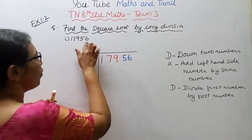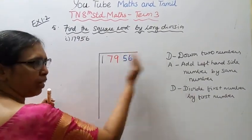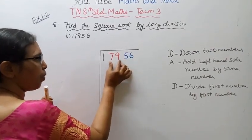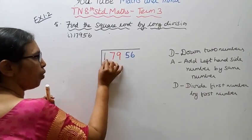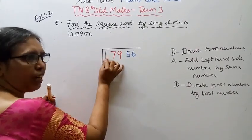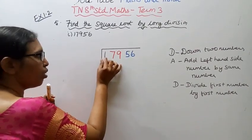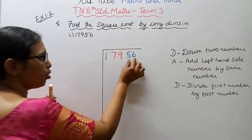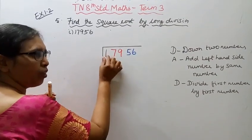The number is 17956. We take the first two numbers, then the next two numbers, then the remaining one number. We group them as: 1, 79, 56 — that is: 1 | 79 | 56.